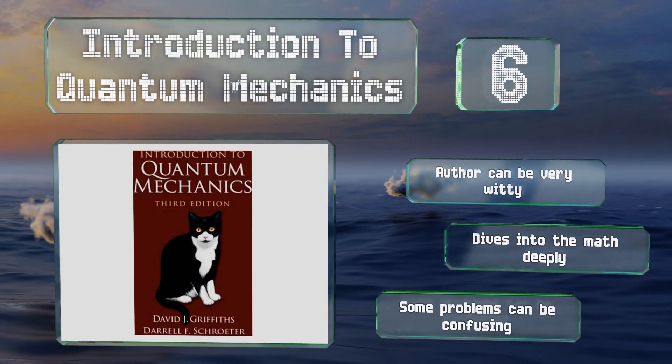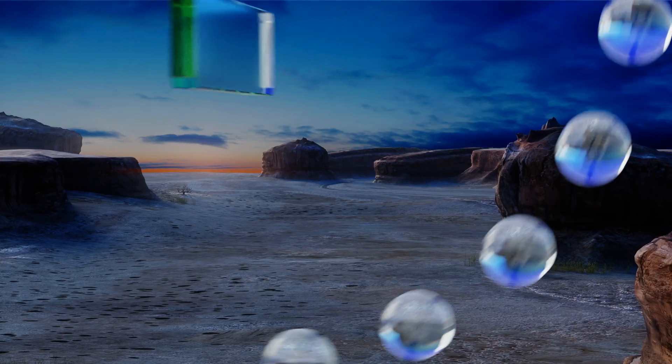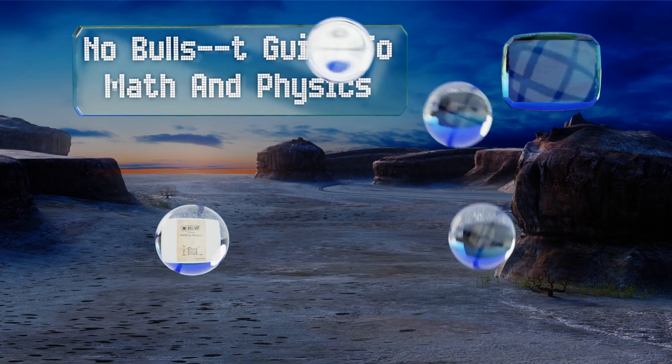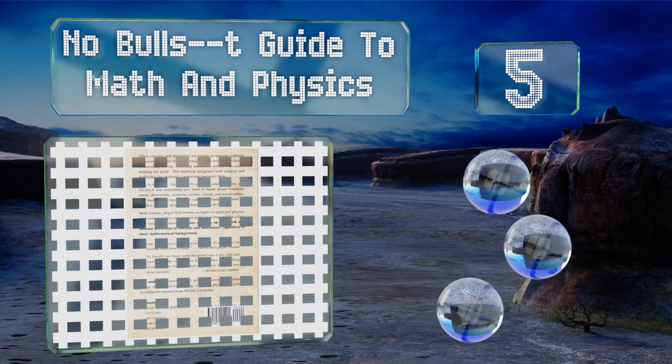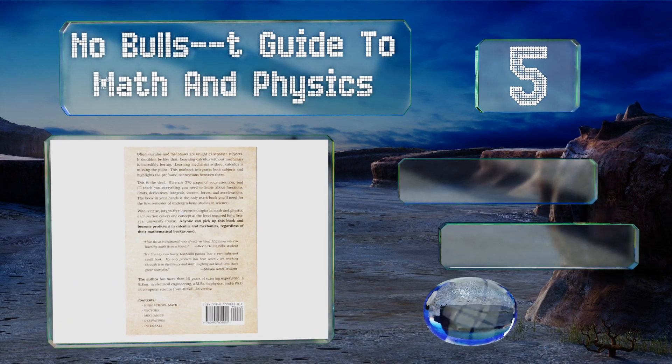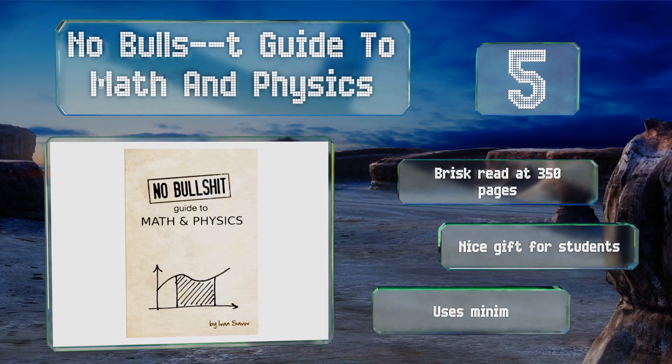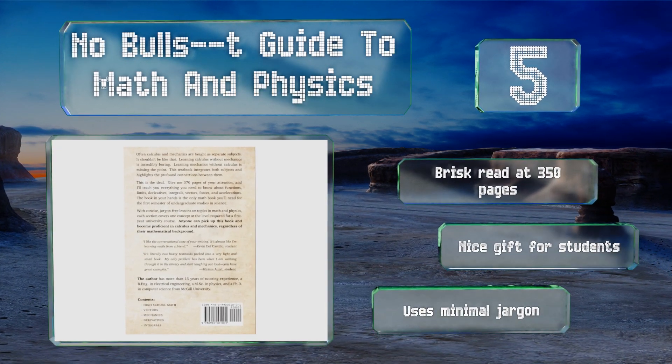Halfway up our list at number five, as the playful name would have you guess, The No BS Guide to Math and Physics takes a light-hearted approach to a serious subject matter - the very manner in which matter and energy relate and function. It makes for great summer reading before the semester begins. It's a brisk read at 350 pages and makes a nice gift for students. It uses minimal jargon.